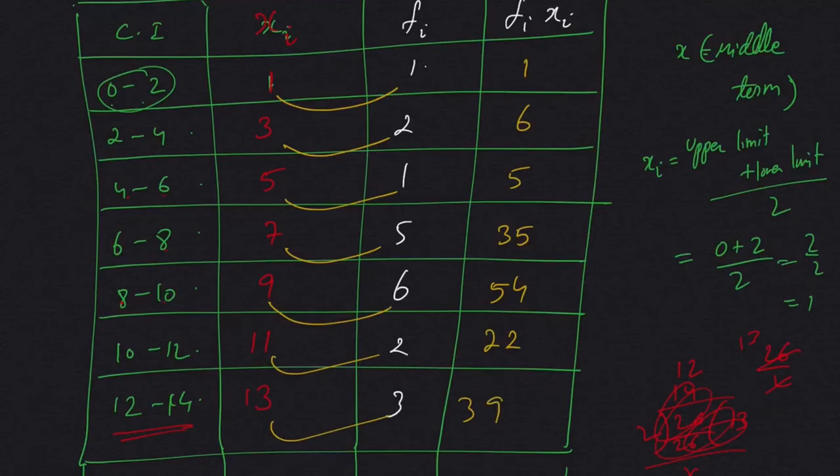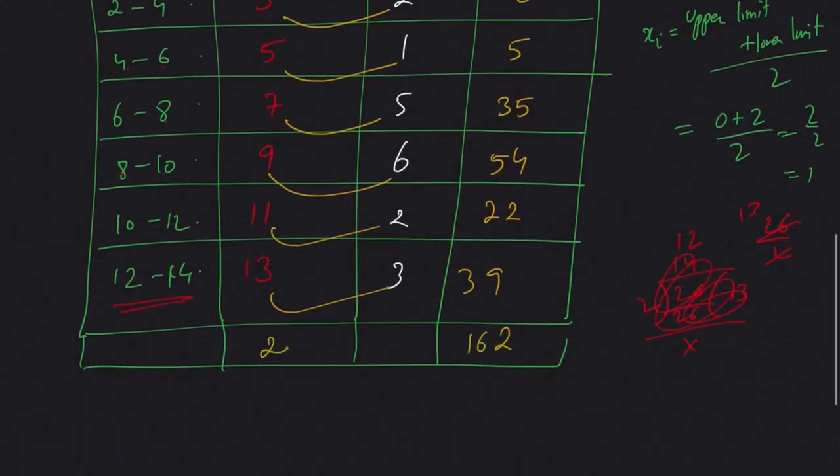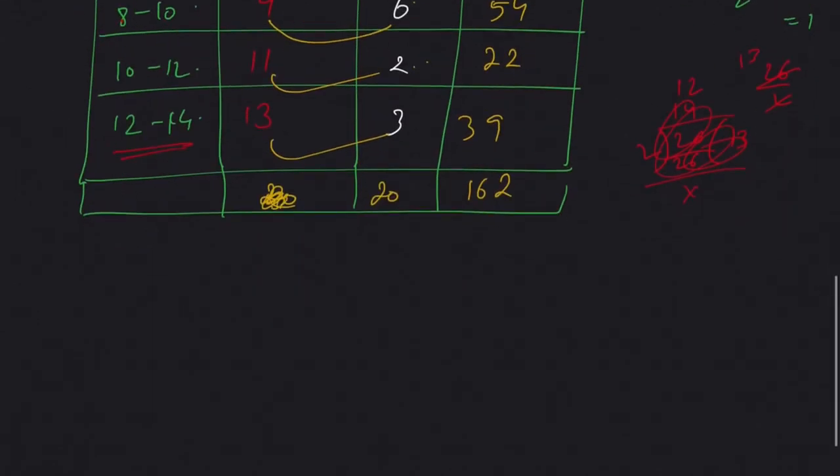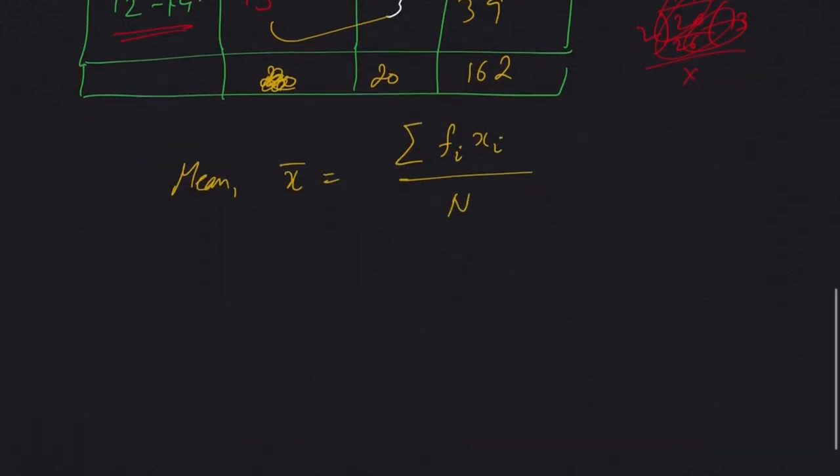Now when we add these, we will get 162. And the total of this frequency: 2, 3, 4, 9, 15, 17, 20. So the mean using direct method, X bar will be summation of the product of frequency and X, the middle value of the class interval, divided by n.